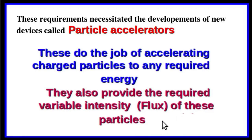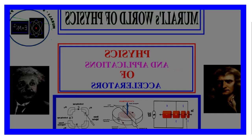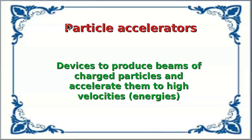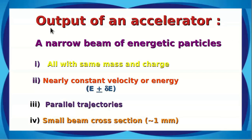In today's video we will be discussing the physics of particle accelerators. Particle accelerators are devices to produce beams of charged particles and to accelerate them to high velocities, that means high energies. The output of an accelerator would be a narrow beam of energetic particles, all having the same mass and charge and nearly constant velocity and thereby energy. Of course, we allow for a small variation in energy by delta E, and the aim is to reduce delta E as much as possible.